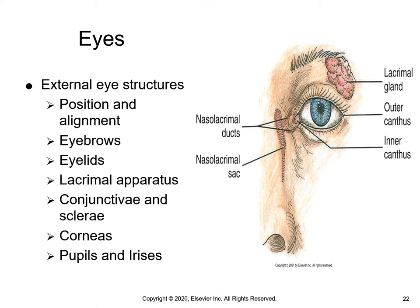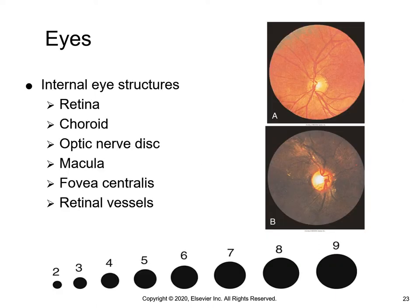The lacrimal duct in the corner of the eye secretes and drains tears, which help to moisten and lubricate the eye structure. The cardinal fields of gaze is where the nurse will assess extraocular movements. The patient will look straight ahead and follow the nurse when the nurse raises a pen or their finger around the patient's eye — the patient is only moving their eyes and not their head. Nystagmus is a term that indicates an involuntary rhythmical oscillation of the eyes, which can occur due to injury to the eye muscles or a disorder of the cranial nerves that innervate the muscle.